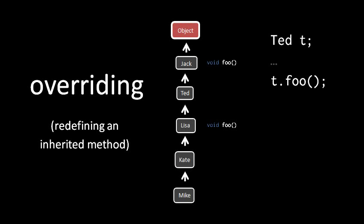Well this depends upon the runtime type of t. What's the actual object being held in t at the time of this invocation? If t holds a Ted object, then this is going to invoke the foo defined in Jack. But if t holds a Lisa, Kate, or Mike object, then it's going to invoke the foo defined in Lisa.